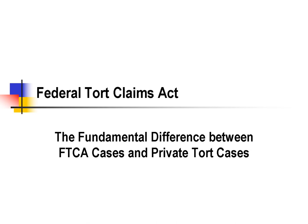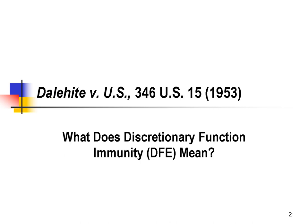The Federal Tort Claims Act is the primary vehicle for suing the federal government for money damages for injuries. As noted in the introduction, it requires claims be filed with the government before they go to court. This traps many lawyers who are not familiar with its special procedures. In this discussion, we're going to look at the fundamental difference between Federal Tort Claims Act cases and private tort claims, which mostly arises from the discretionary function immunity — a defense intended to protect government policy and discretionary decision making from being challenged through tort litigation.